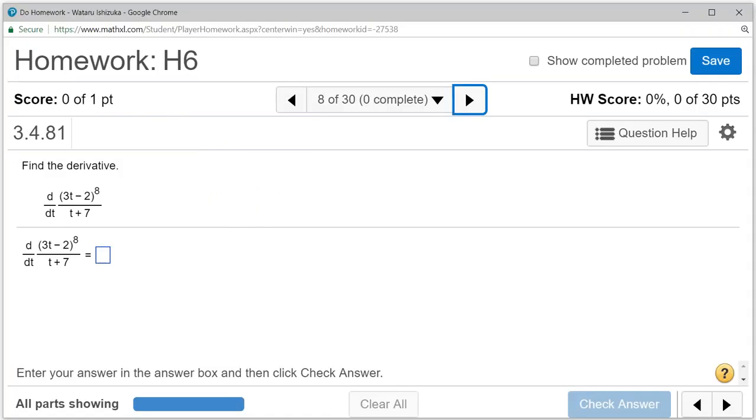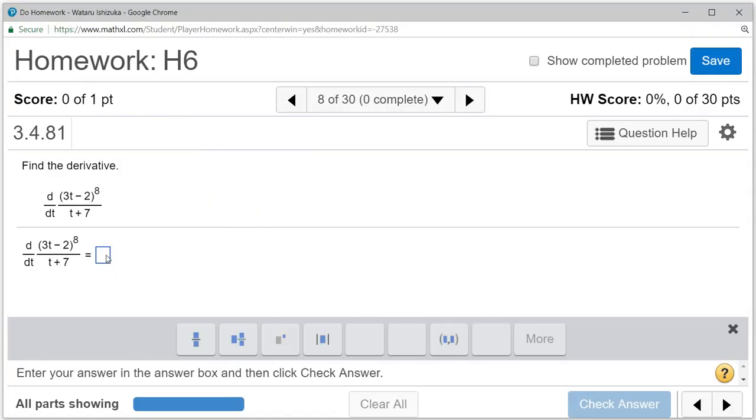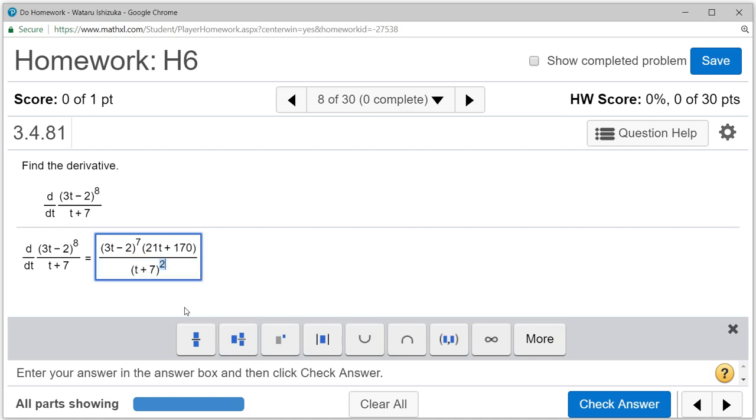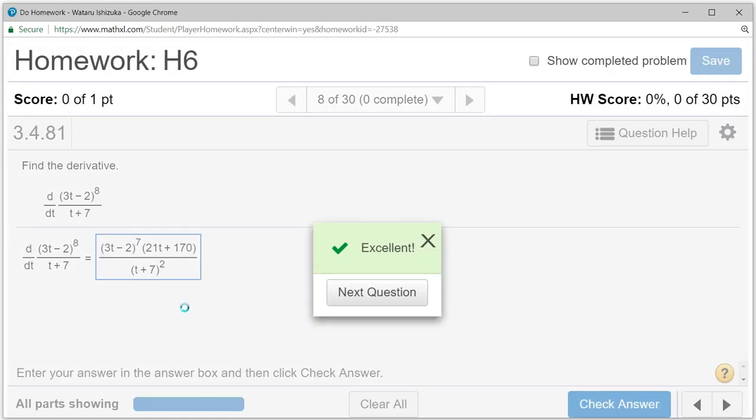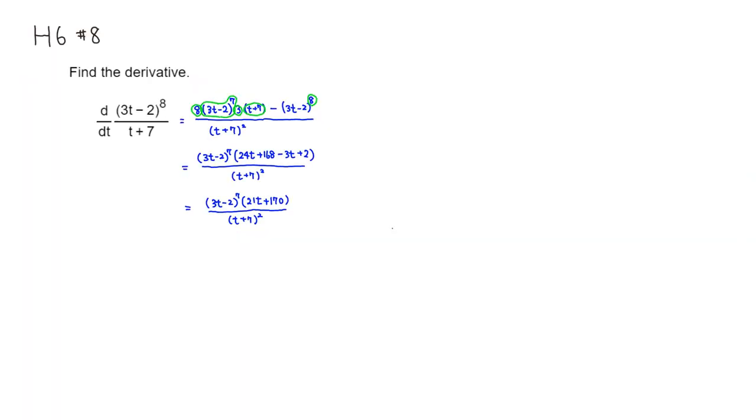All right, so let's type this guy in. So what we got was, so we have a fraction, and on top you have 3t minus 2 raise it to the 7th power, times 21t plus 170. All right, and over quantity t plus 7, and raise it to the 2nd power. Let's check the answer. All right, we got that. All right, that's it. I hope that this was clear.